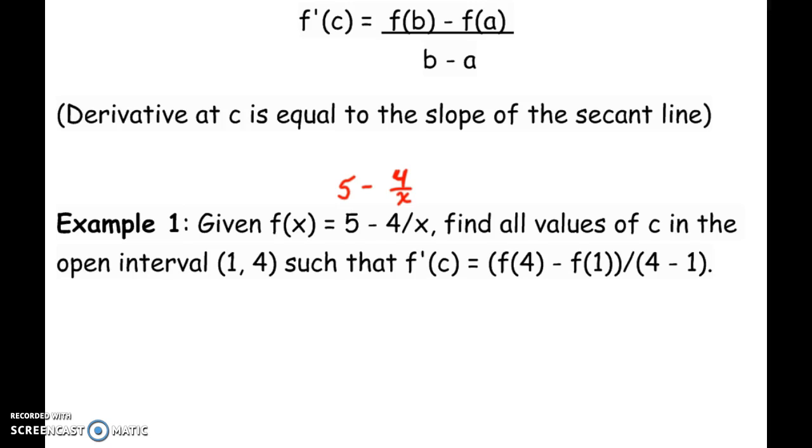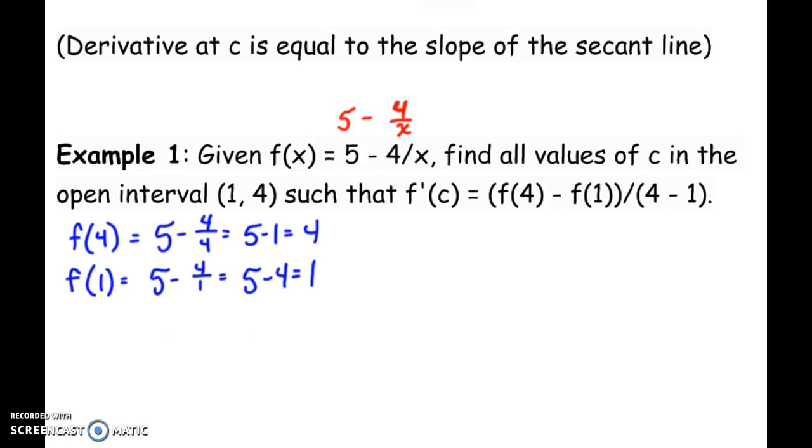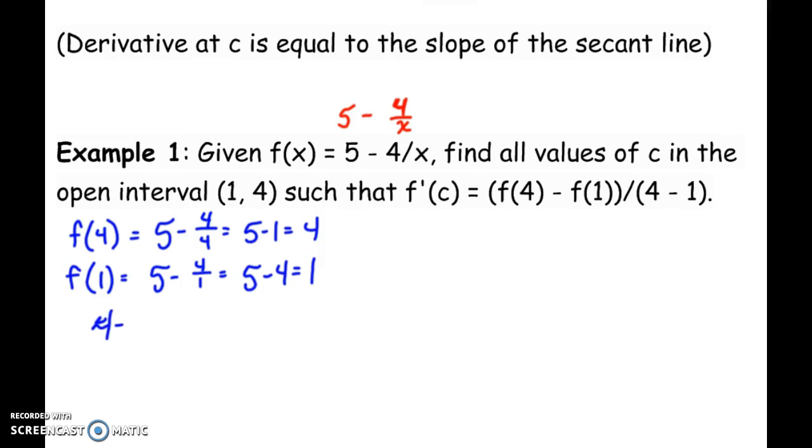So let's start by finding what is the slope of our secant line. The slope of our secant line would be 5 minus 4 over 4, so that's 5 minus 1. F of 1 is 5 minus 4 over 1, so that's 5 minus 4, which is 1. So we've got 4 minus 1 over 4 minus 1. 3 over 3, the slope of our secant line is 1.